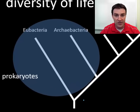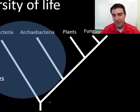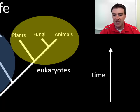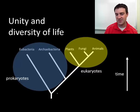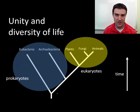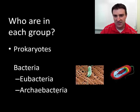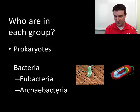Those two groups are the prokaryotes, which includes two types of bacteria, and the eukaryotes, which is really everybody else except bacteria. We can also see in this diagram that eukaryotes are newer in life's history. We'll eventually justify why we split bacteria into two types.